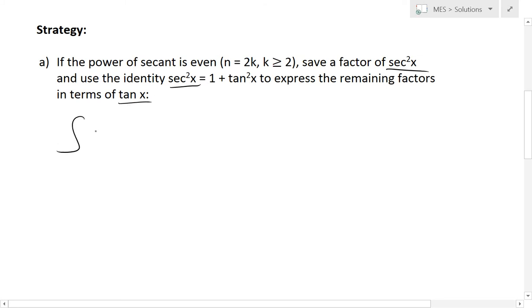So we have the integral tan^m(x) sec^(2k)(x) dx. We'll write down tan^m(x) and separate secant^(2k) by writing sec²(x) times secant to the power of 2k minus 2, which is sec^(2k-2)(x), and then secant squared outside, dx.